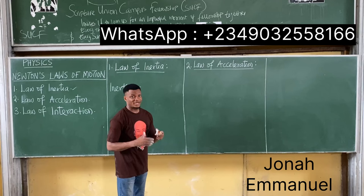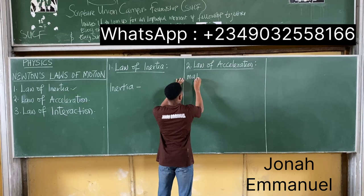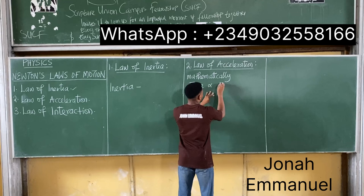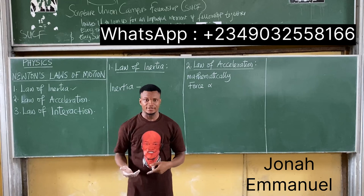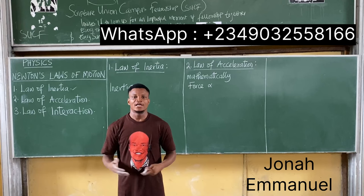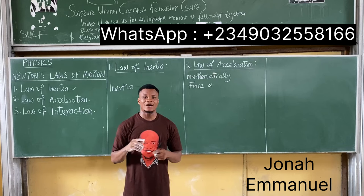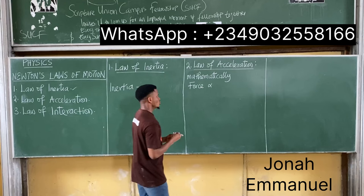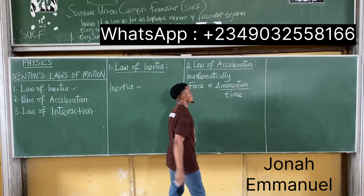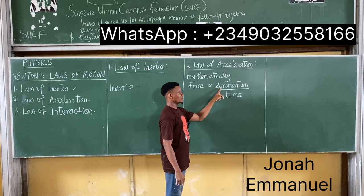In mathematical form, force is directly proportional to the rate of change of momentum. The word 'rate' is a time-bound word — when we say the rate of something, it means that thing is changing with respect to time. So the rate of change of momentum becomes change in momentum divided by time.